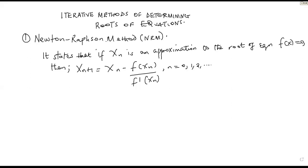This is Mr. Ipa. I will cover iterative methods of determining the roots of equations — still numerical methods. Here we're going to look at different methods that we use to determine the iterative formulas. We've already covered interpolation and extrapolation, and the trapezium rule. Now we are in iterative formulae, and we are going to begin with the Newton-Raphson method, NRM.